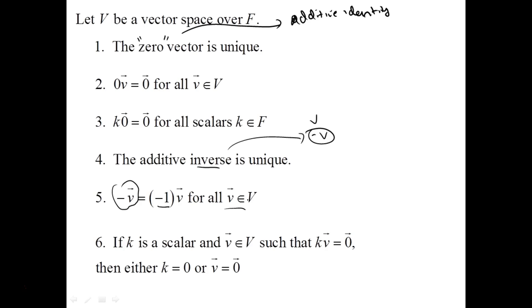Finally, the sixth property: if you have a vector v from set V and a scalar k from field F defining the vector space, and scaling v by k gives the zero vector, it must be true that either k is zero or v is the zero vector. There's no way for a nonzero scalar and nonzero vector to produce the zero vector when multiplied.